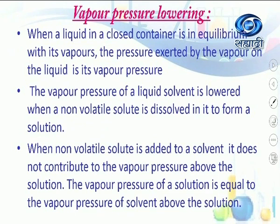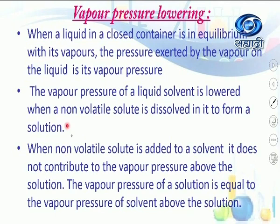What is the meaning of lowering of vapor pressure? When a liquid in a closed container is in equilibrium with its vapor, the pressure exerted by the vapor on the liquid is its vapor pressure. The vapor pressure of a liquid solvent is lowered when a non-volatile solute is dissolved in it to form a solution.